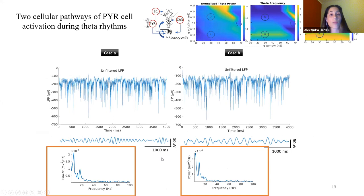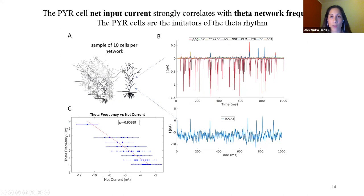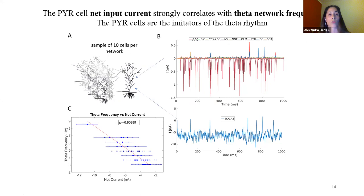Those two networks produce theta rhythms of very similar power. This allowed us to hypothesize that what's really important is the net amount of current delivered to the pyramidal cells. We plotted the theta frequency of any given network as a function of the mean input current to the pyramidal cells, and found these two modalities are very strongly correlated. This tells us that the theta rhythm is controlled by that input current. We also found the input current was very noisy, showing that the rhythm is not imposed by the inhibitory cells but is generated by the pyramidal cells, suggesting the frequency depends on their intrinsic properties.